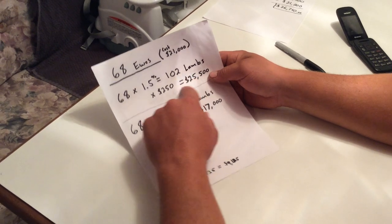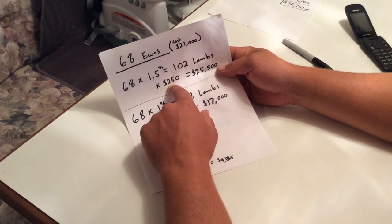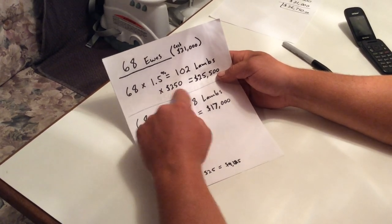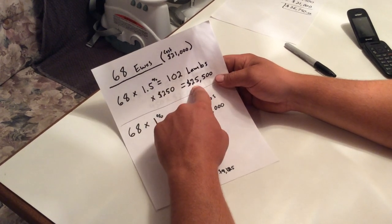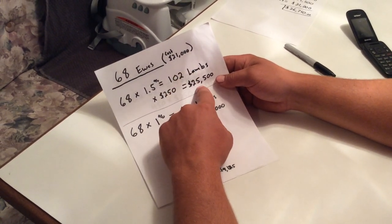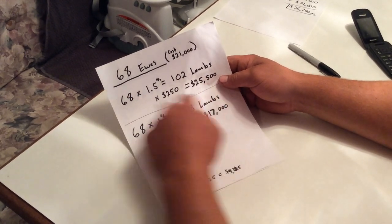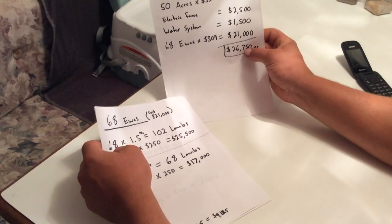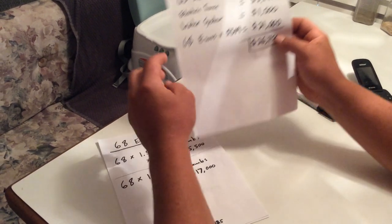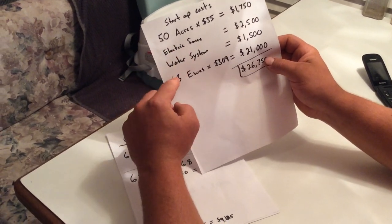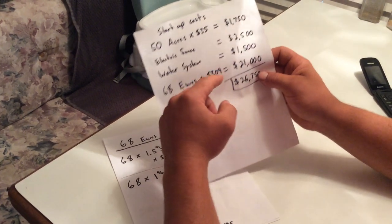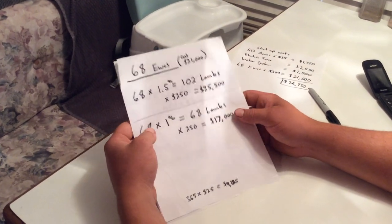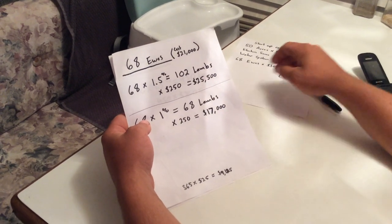I know we can take those 102 lambs to the sale barn and get about $250 each for them. And again, I'm being fairly moderate. I mean, they could go $300. But we would be able to make our money back from the sheep cost just by taking those 102 lambs to the sale barn the first year. And we'd only be about $1,000 short of paying everything the first year. And all this stuff, electric fence, water system, it doesn't wear out really. We'll be able to use it for years and years and years. Those costs will get less every year we use them. Yeah, we won't have those costs next year.